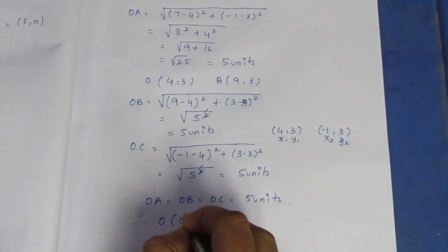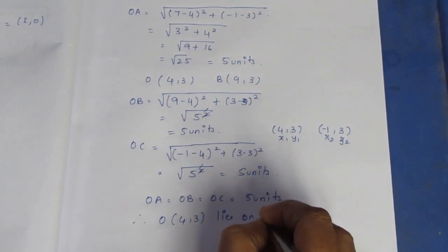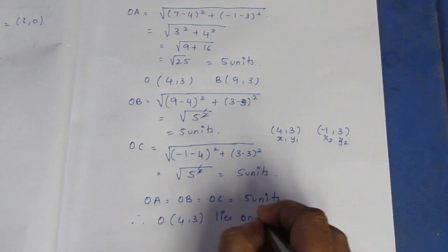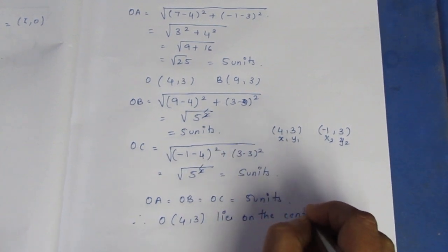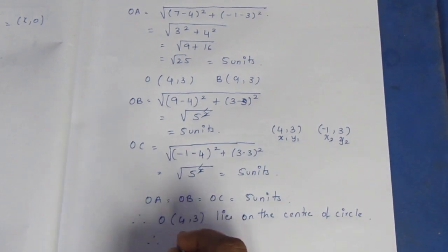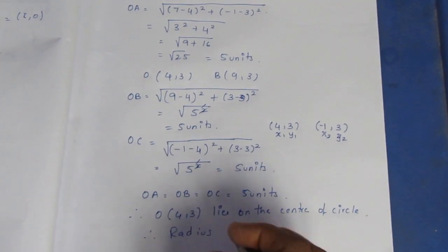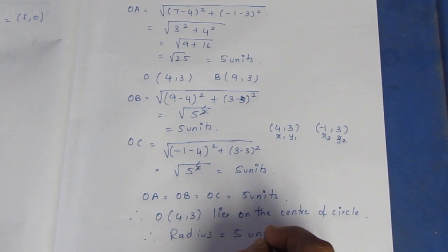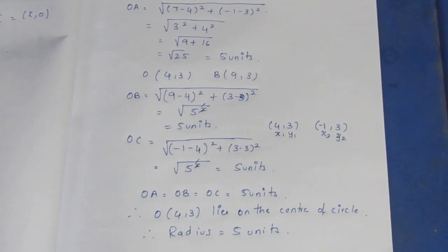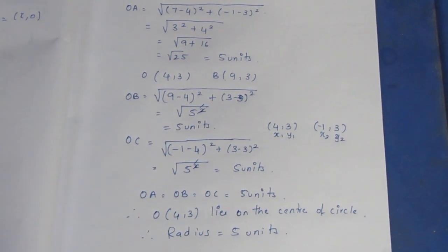Therefore, (4,3) lies at the center of the circle, since OA = OB = OC = 5 units. Therefore, the radius is equal to 5 units. This is the complete answer. Thank you.